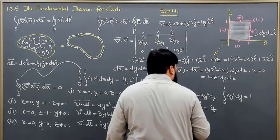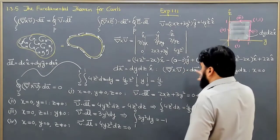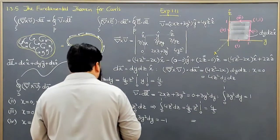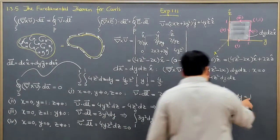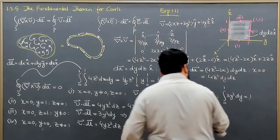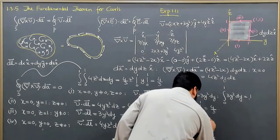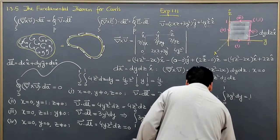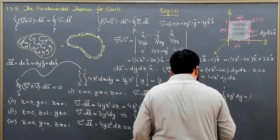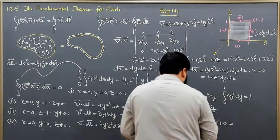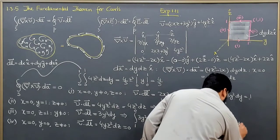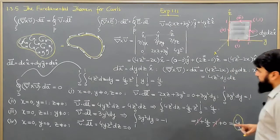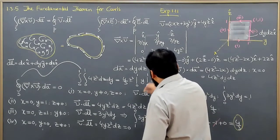So we have our four components along the line integral on this square. The first path gave 1, the second gave 4/3, the third gave minus 1, and the fourth gave 0. Adding them together: 1 and minus 1 cancel, and we are left with only 4/3. This is the result of the line integral, and 4/3 is also the result of the surface integral.